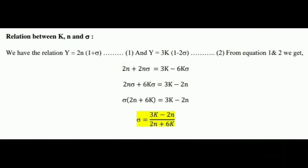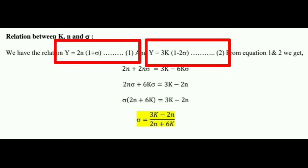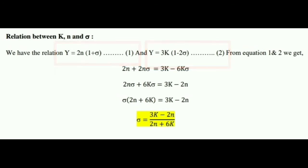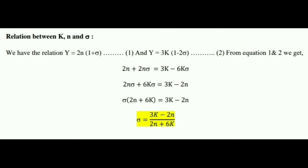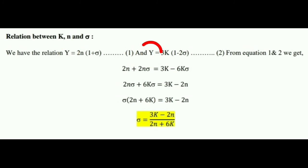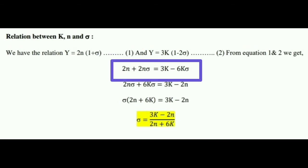In the next topic, we derive the relation between bulk modulus, rigidity modulus, and Poisson's ratio. Again we use equation number one: y = 2n(1 + σ), and equation number two: y = 3k(1 − 2σ). Since Young's modulus Y is common to both, we equate them and expand: 2n + 2nσ = 3k − 6kσ.